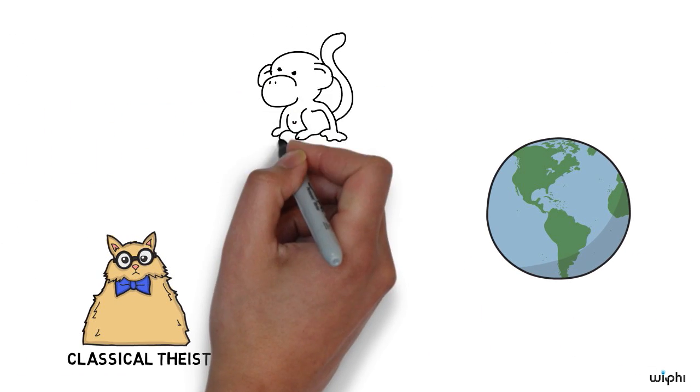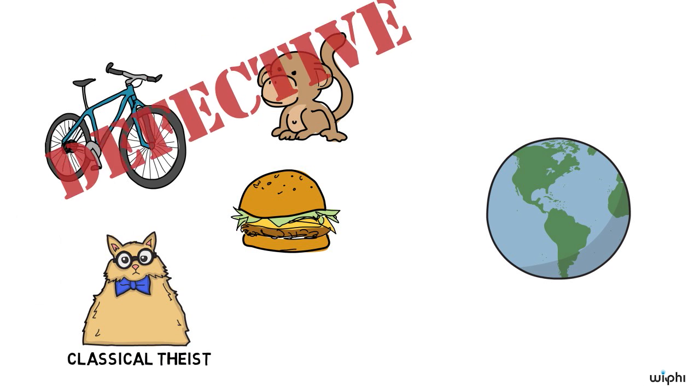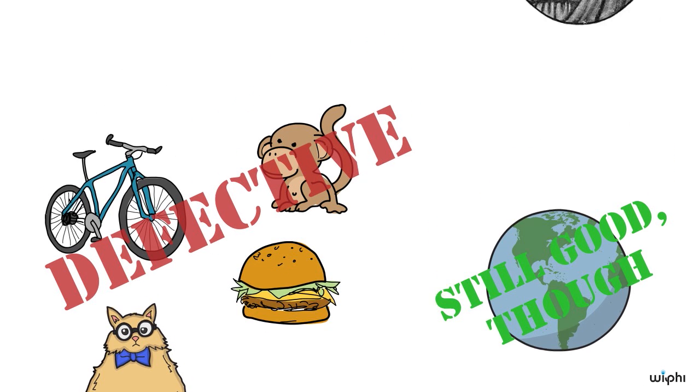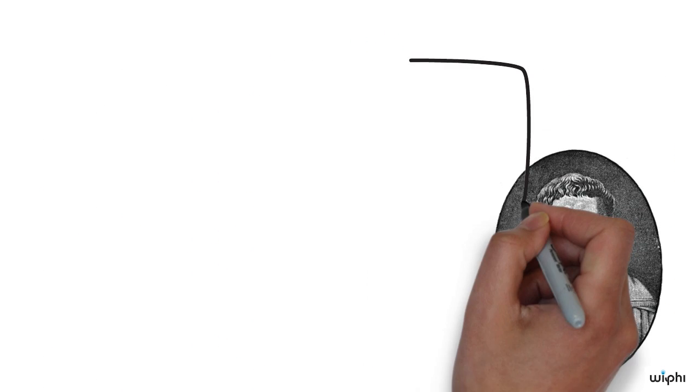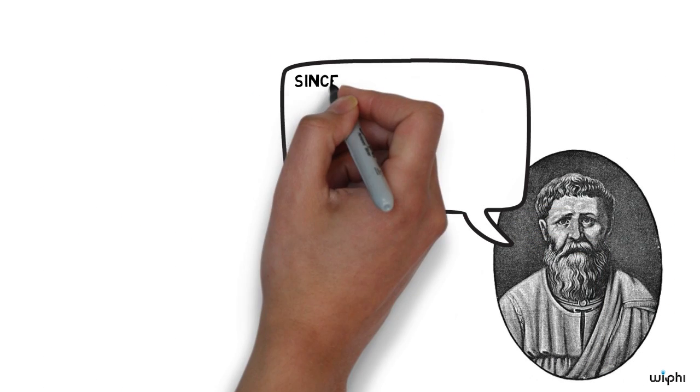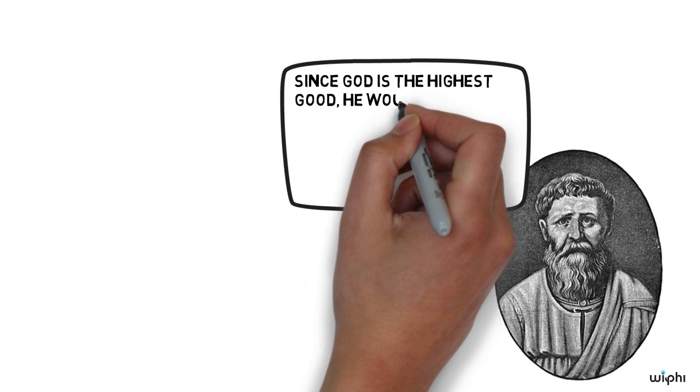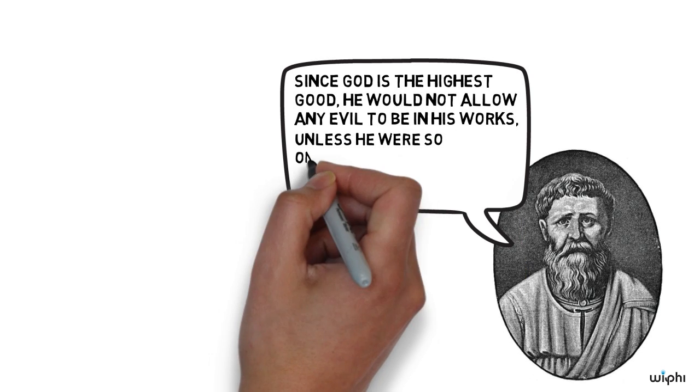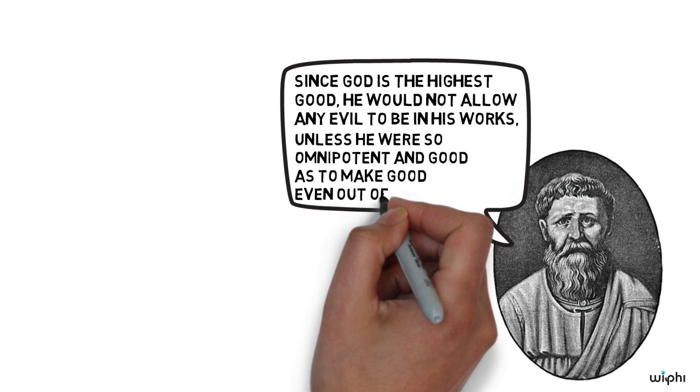Classical theists hold that although some parts of the created world are defective, the world as a whole is not. Aquinas quotes a famous saying of Augustine: since God is the highest good, he would not allow any evil to be in his works, unless he were so omnipotent in good as to make good even out of the evils.